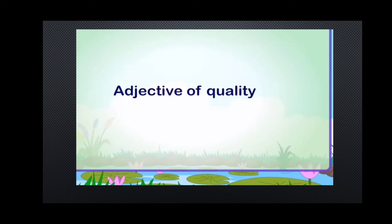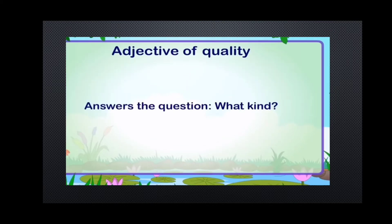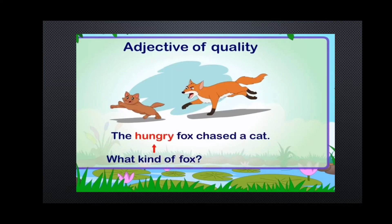Adjective of quality means 'what kind of?' An adjective of quality is an adjective that shows the kind or quality of a noun or a pronoun. For example: the hungry fox chased a cat. What kind of fox is it? It is hungry — so 'hungry' tells the quality of the fox. More examples: 'this is the historical site' — historical is the quality. 'Too sharp a place in a big ground' — big is the quality.